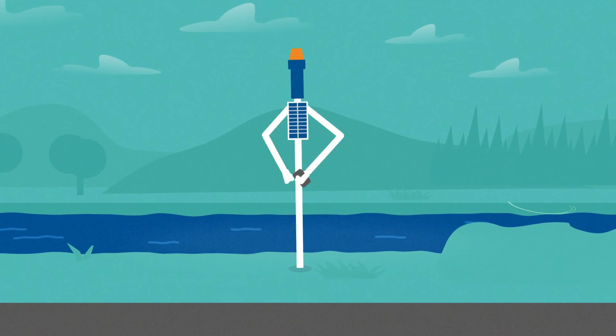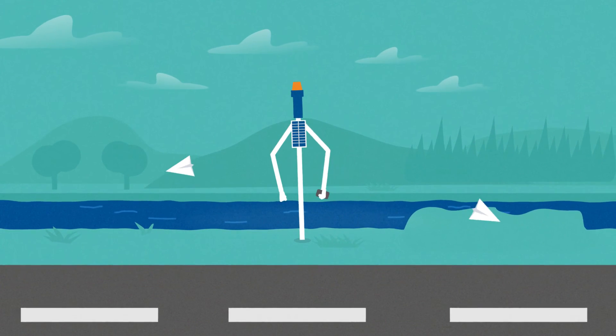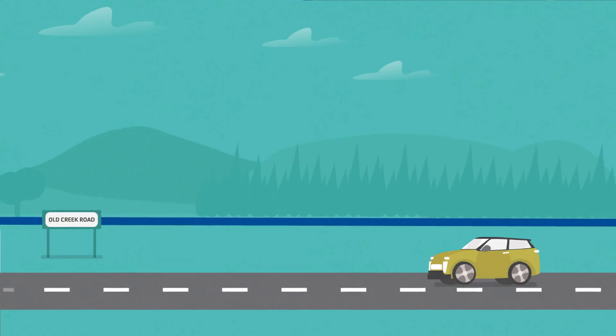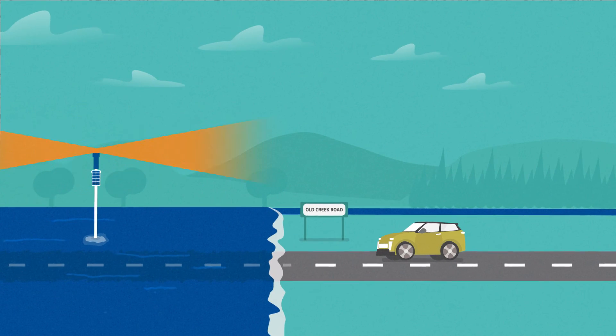When water levels return to normal, Dipstick sends another SMS to alert council and the SES that the community can now confidently get back on the road. Remember, it's never safe to drive through floodwater.